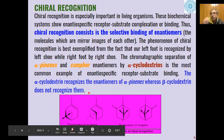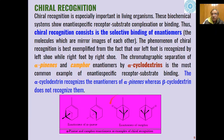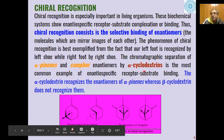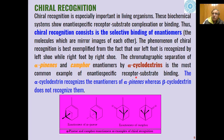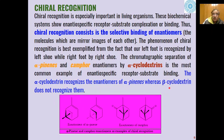For example, the chromatographic separation of alpha-pinene and camphor enantiomers can take place using alpha-cyclodextrin. This is the most common example of enantiospecific receptor-substrate binding. Alpha-cyclodextrin recognizes the enantiomers of alpha-pinene, whereas beta-cyclodextrin does not — there will be no binding of any enantiomer of alpha-pinene with beta-cyclodextrin.